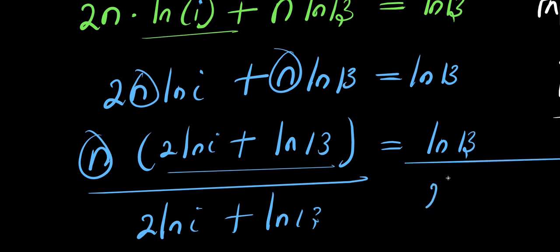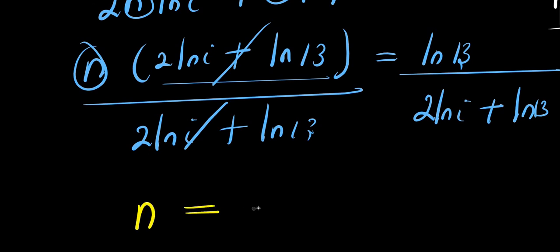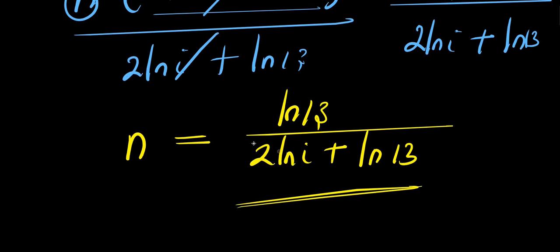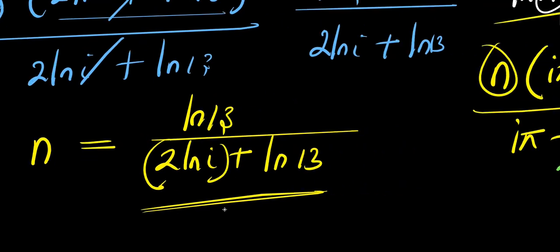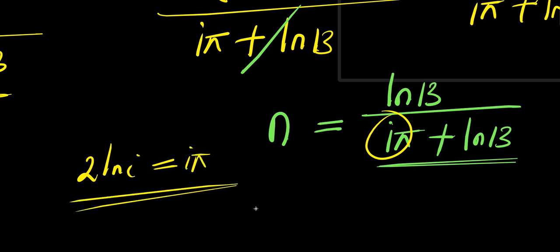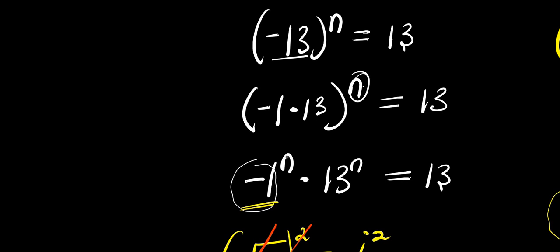So this also becomes our answer — another form of the answer. Note that in the first approach we have i times pi in the denominator, while here we have 2 times natural log i. These are equivalent because 2 times natural log i equals i times pi. So both answers are consistent. Don't forget to subscribe and share this video — thank you and see you again in our next video.